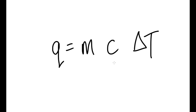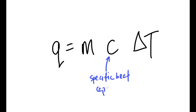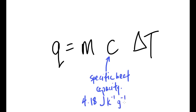You'll be given various bits of data in the exam. The most potentially confusing one is C — the specific heat capacity. This will be given to you in the exam; there's no way you'd ever have to learn this value. The value given in an exam will be 4.18 joules per kelvin per gram.